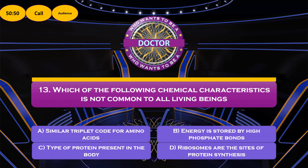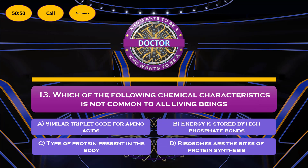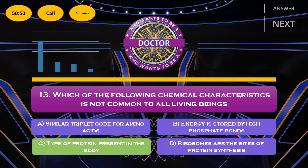Question number 13: which of the following chemical characteristics is NOT common to all living beings? Option A: simple triplet code for amino acids — true for all living beings. Option B: energy stored by high-energy phosphate bonds — also similar for all living beings. Option D: ribosomes are the site for protein synthesis — correct for all living beings. Option C: type of protein present in the body — this is the correct answer, as protein types vary.